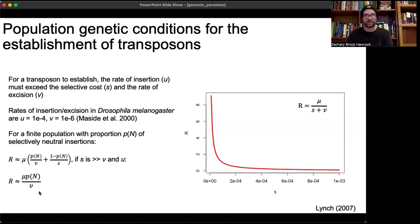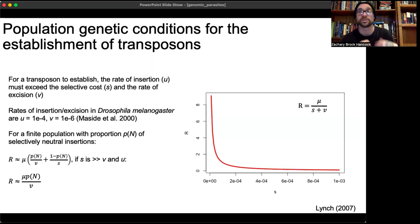This simplifies to: R equals the mutation rate times the proportion that are selectively neutral, divided by the excision rate. Ultimately, for effectively neutral transposons to establish, the insertion rate just needs to exceed the rate of excision.